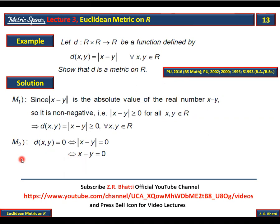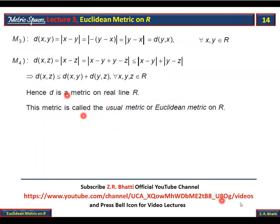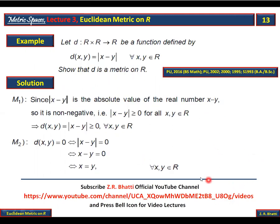D(x,y) = 0 conversely implies |x - y| = 0, and this conversely implies x - y = 0, because zero is the only real number whose modulus equals zero. And x - y = 0 conversely implies x = y. This completes the proof of the second axiom, which holds for all x, y belonging to R.